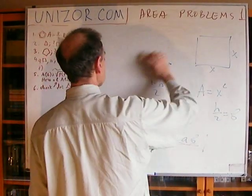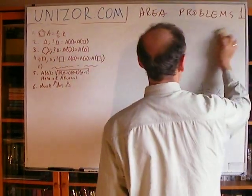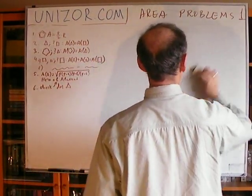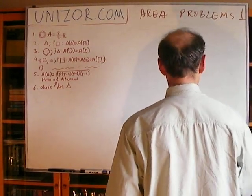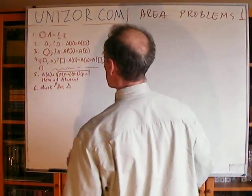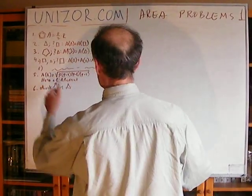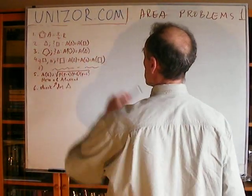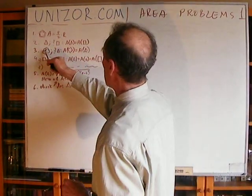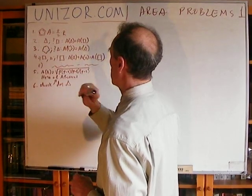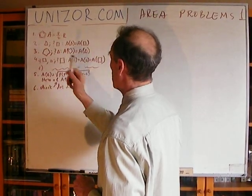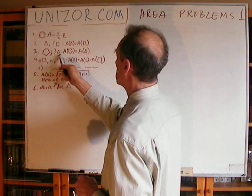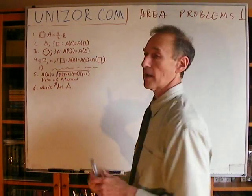Not all of these problems are simple, by the way. There is one complex one — problem number five. So now we are on number three: if you have a polygon, we have to construct a triangle which has the same area as the polygon.